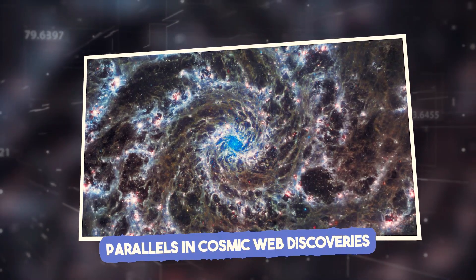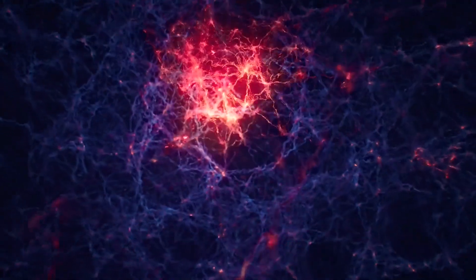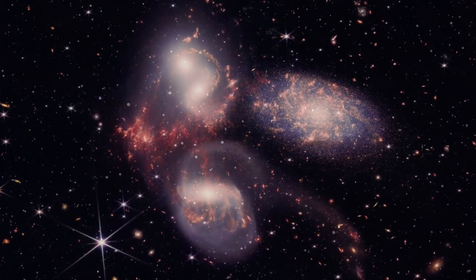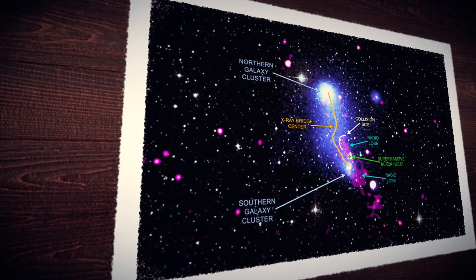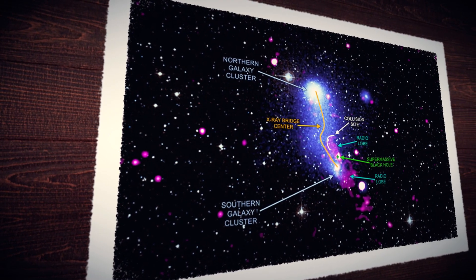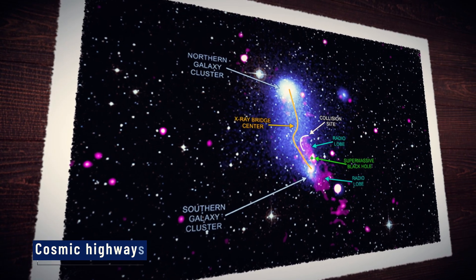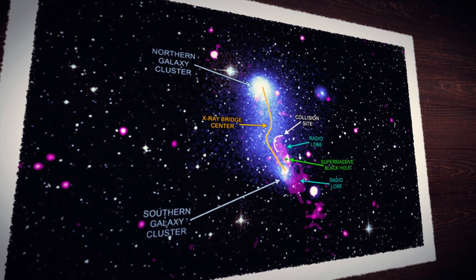Parallels in Cosmic Web Discoveries. Just a few years ago, the cosmic web was mostly theory, a latticework of galaxies and dark matter, stretching millions of light-years across. Then, JWST and other telescopes began to reveal these filaments in stunning detail. Like the discovery of a three million light-year bridge linking distant galaxy clusters. These were cosmic highways, vast and cold, channeling matter and energy on unimaginable scales.